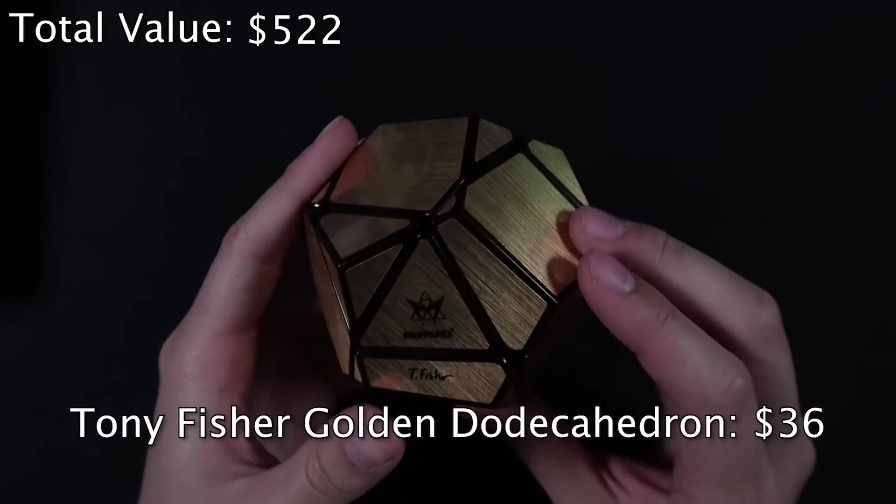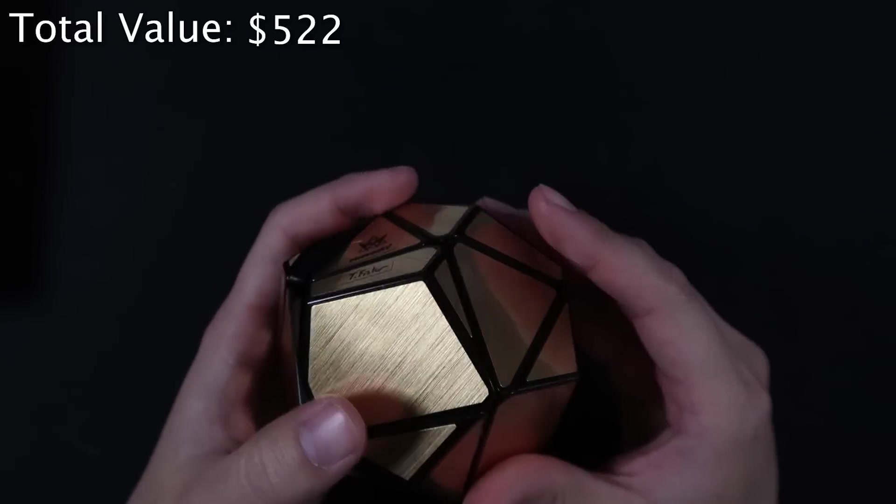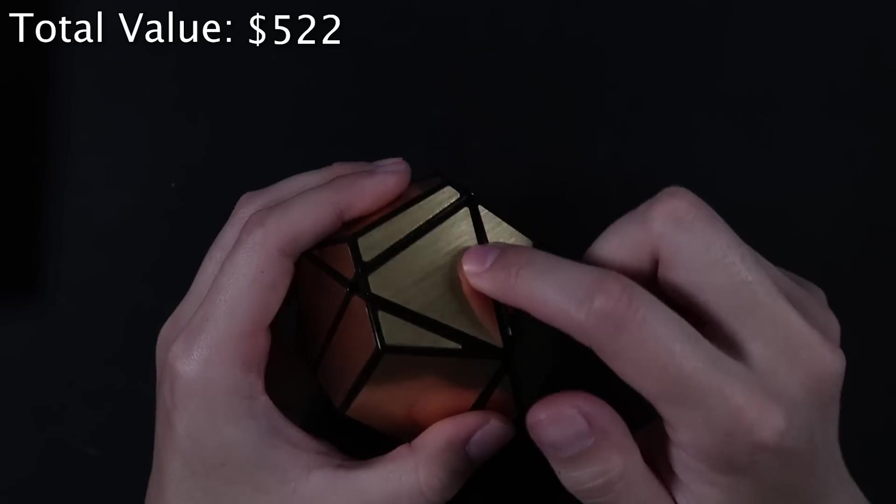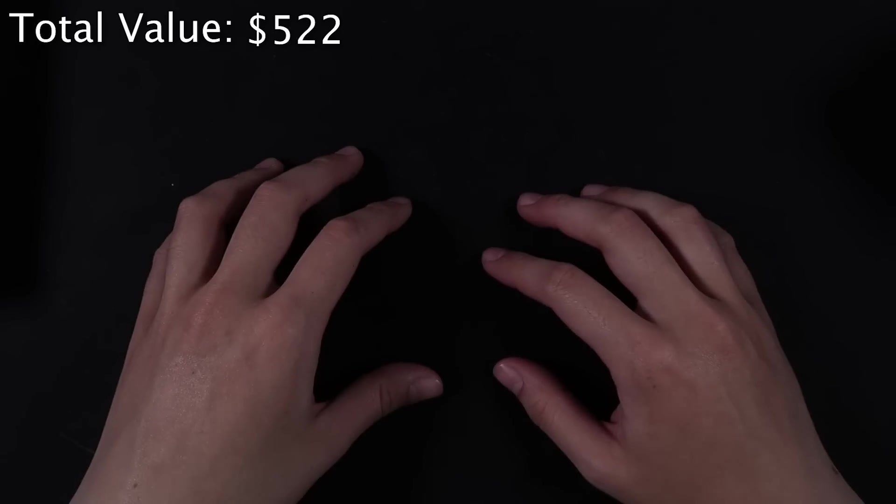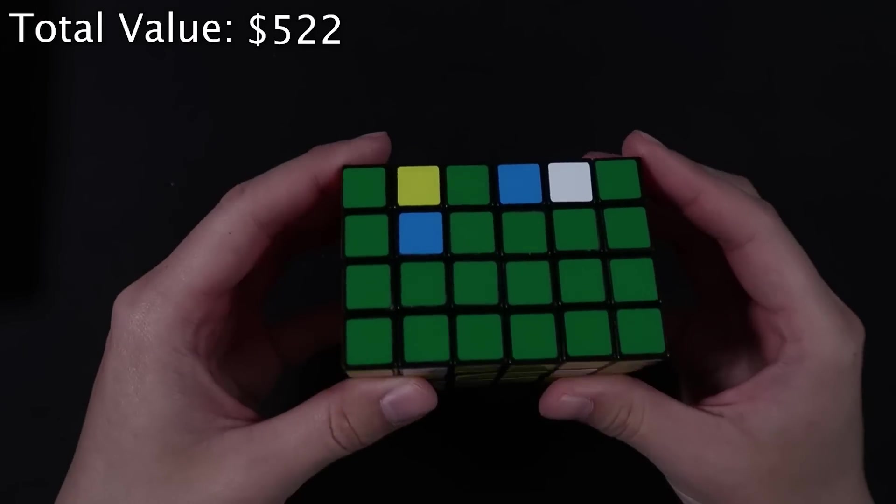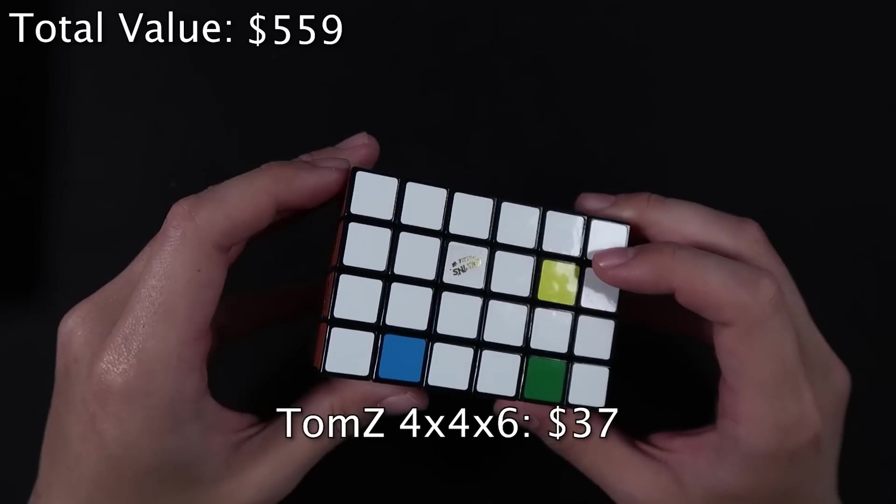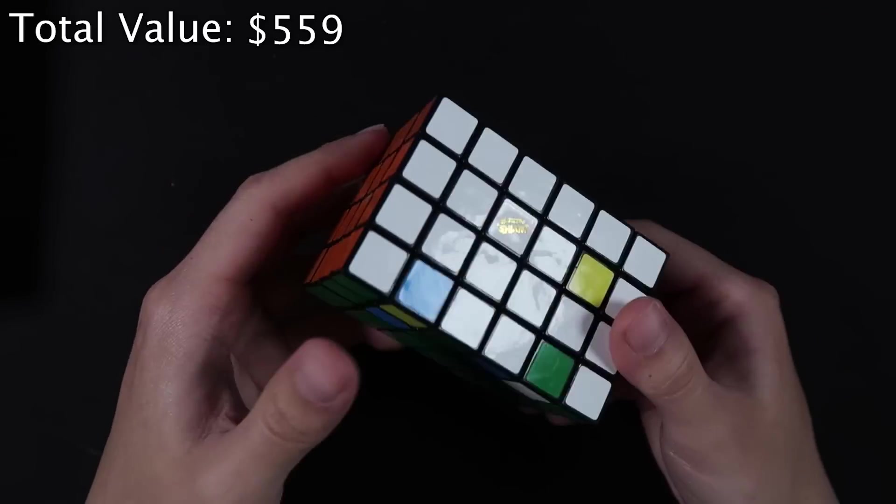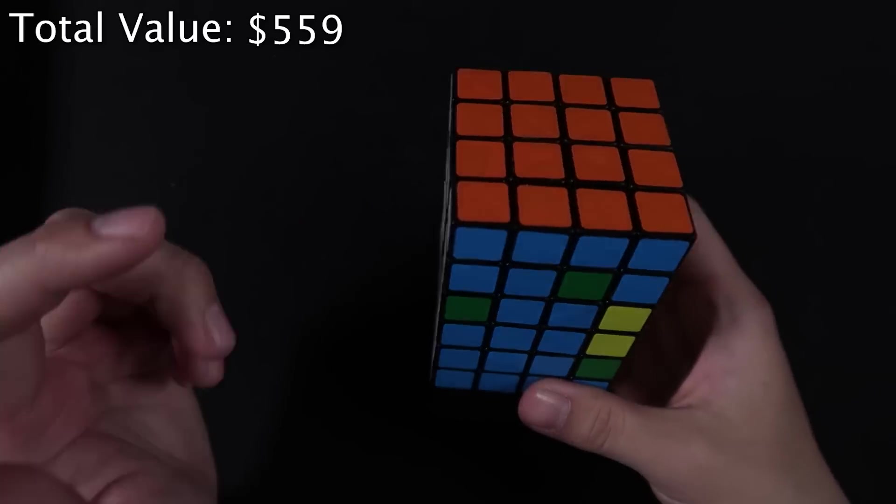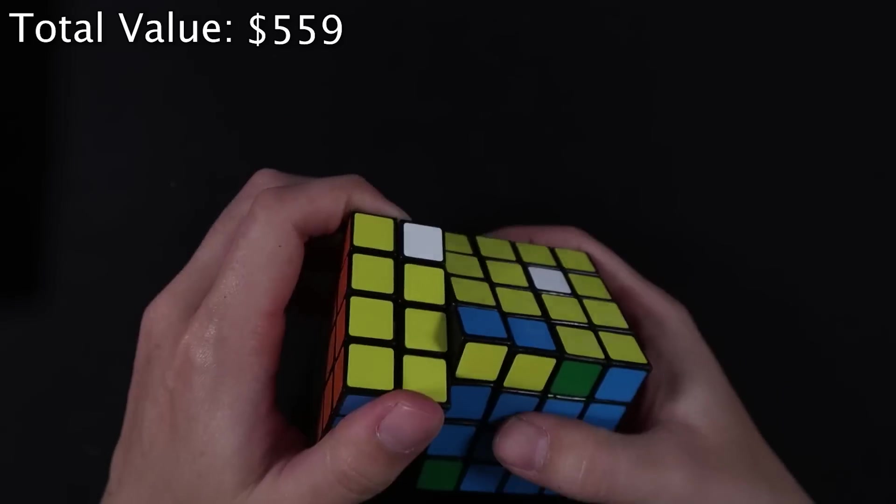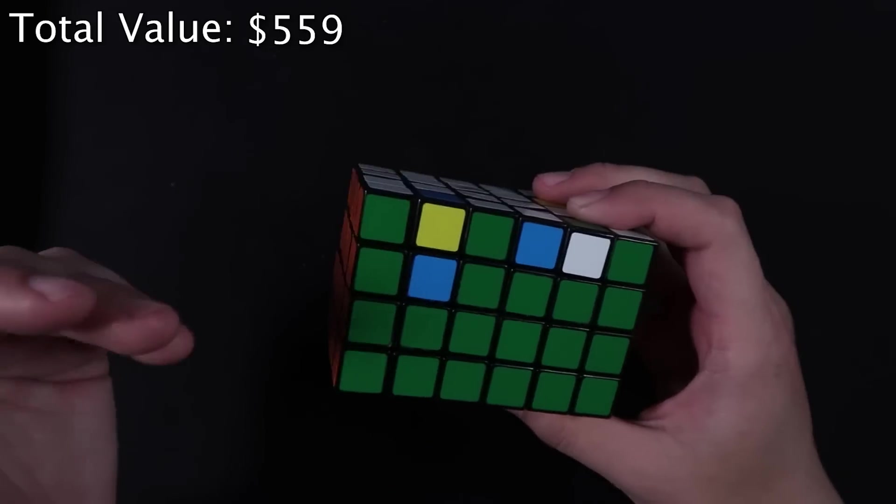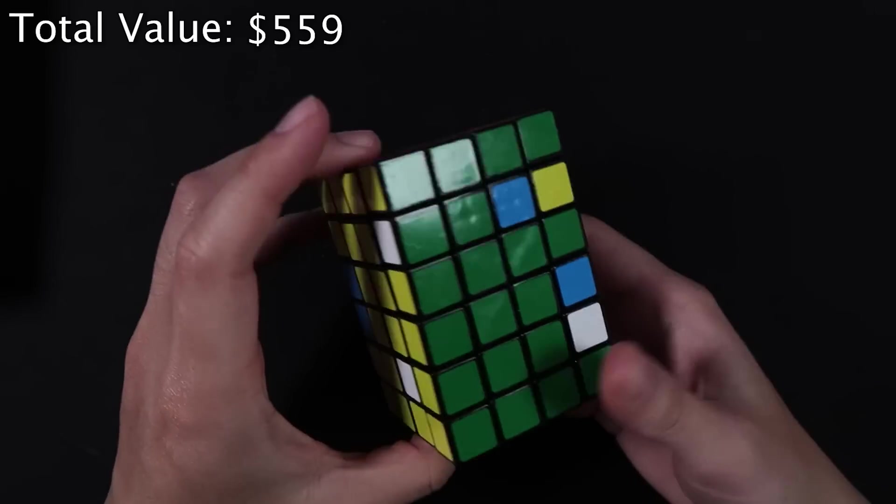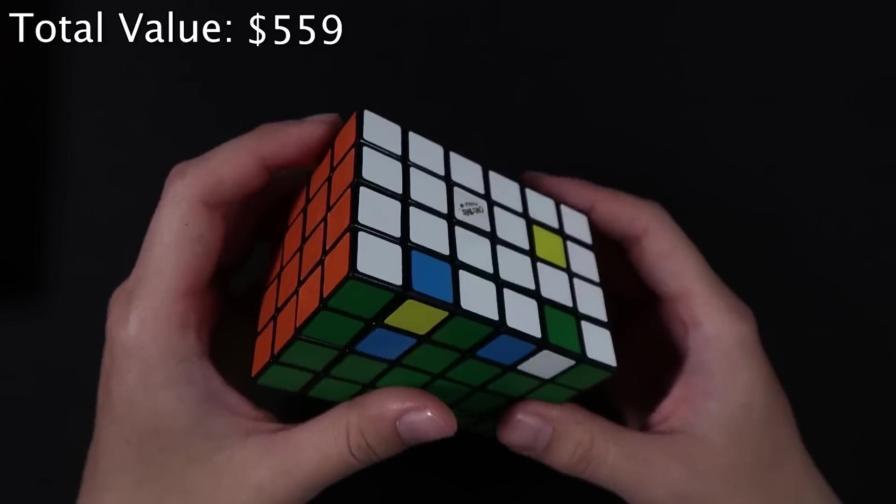This is the Tony Fisher Golden Doe Decahedron. I'm really happy to have this puzzle. It just looks really sleek. I love the gold on black, and overall, this is just a classic puzzle. Really happy to have this now. And now we will jump into cuboids and just other kind of cube-shaped things. So, first, we have the Tom Z 6x4x4, or 4x4x6. And you can see that I already kind of tried solving this. This is really fun. At first, the turning was kind of stiff, but now that I've used it for maybe half an hour, the turning is a lot better. I'm trying to solve this without looking at any tutorials.